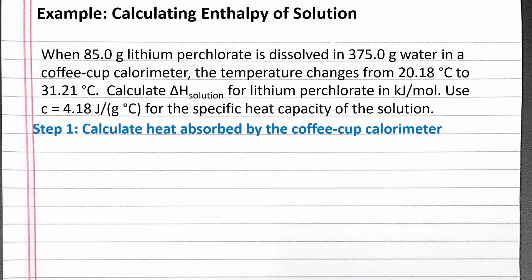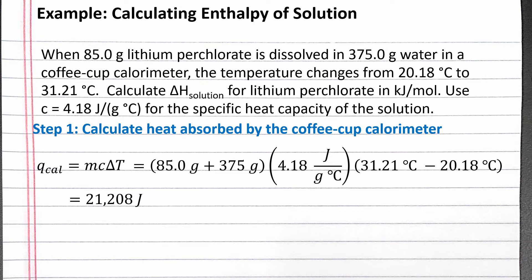Our first step is to calculate the heat absorbed by the contents of the coffee cup calorimeter. We can use the equation heat equals mass times specific heat capacity times change in temperature. The total mass inside the coffee cup calorimeter is 85.0 grams of lithium perchlorate plus 375.0 grams of water. Our change in temperature is the final temperature minus the initial temperature, which is 31.21 degrees Celsius minus 20.18 degrees Celsius. Completing the calculation, the contents of the coffee cup calorimeter absorbed 21,208 joules to increase its temperature.